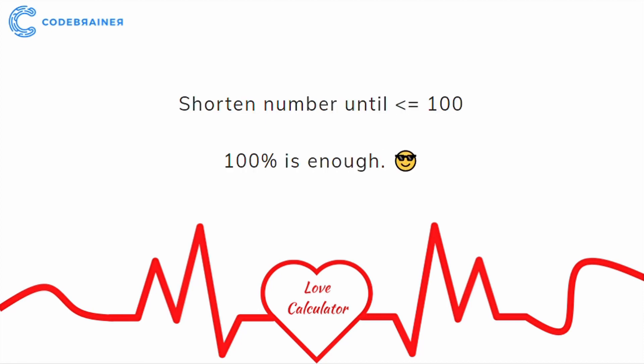We showed you how to calculate love percentages on our channel, but some of you are stuck at percentages greater than 100%. We are strong believers in love, but 100% is enough. The algorithm for the love calculator instructs us to continue until the number for love percentage is less than or equal to 100. So if we have numbers that are greater than 100, we need to continue.